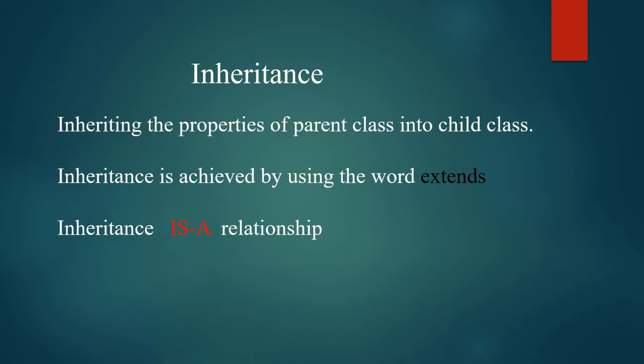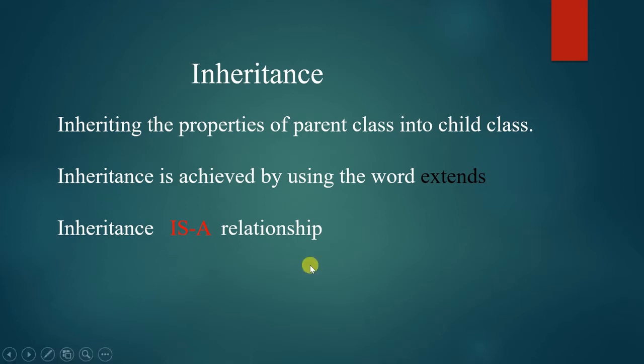Inheritance — let's see what inheritance is. Inheritance means inheriting the properties of the parent class into the child class. For example, here is class A and here is class B. We achieve inheritance using the 'extends' keyword: class B extends class A. Class A is called the base class or parent class, and class B is called the derived class or child class. Inheritance represents an IS-A relationship.